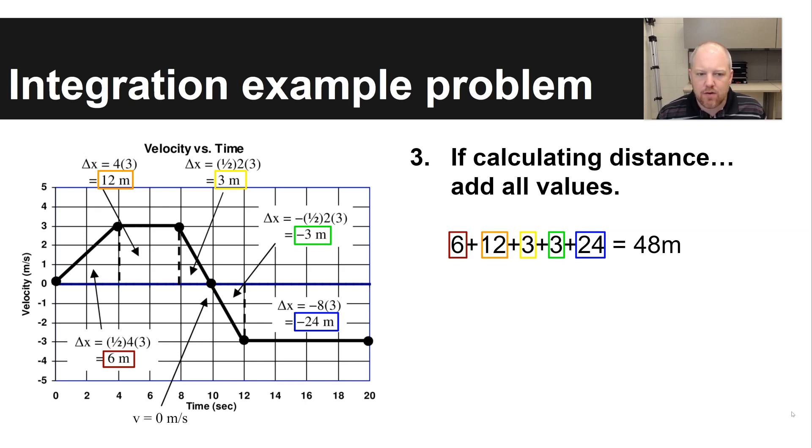It's the absolute value of those. So if I walked from my house to North High School and then back to my house, the total distance that I've traveled is not going to be zero. So 6 plus 12 plus 3 plus 3 plus 24 gives you a total distance traveled of 48. Again, any velocity that's above this zero line is going to be moving forward. Any velocity that's below this zero line would be moving backwards.